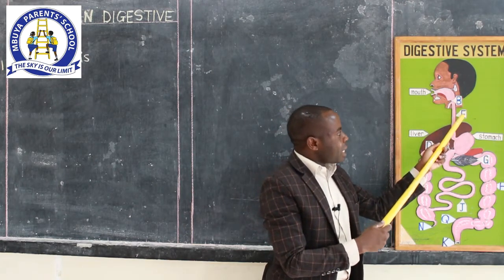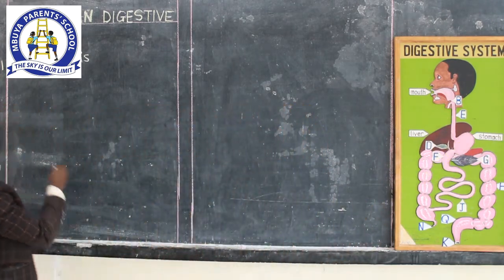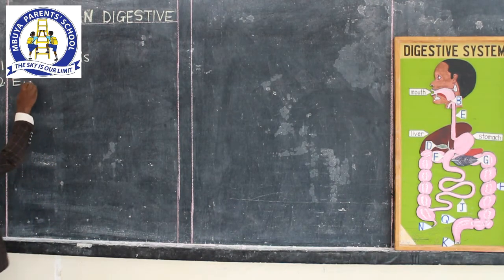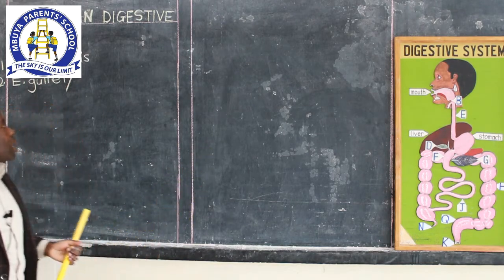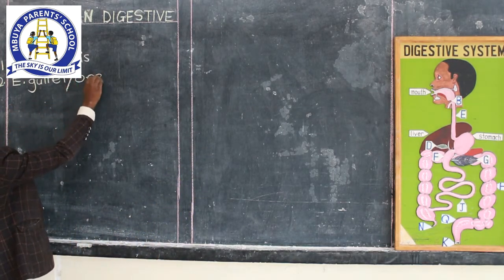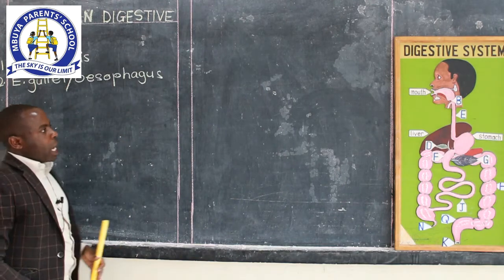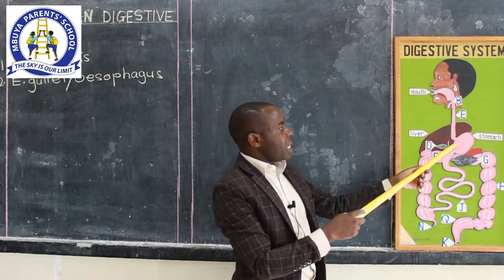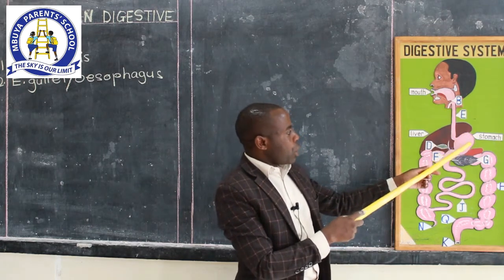We have got part E, which is the passage leading food into the stomach — that is the gullet, also known as the esophagus. When the food comes here, it enters into the stomach and is stored temporarily. The stomach stores food for a short period of time.